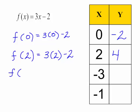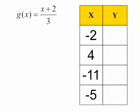What about f at negative 3? That will be negative 9 minus 2, which is negative 11. One more. Let's find our f at negative 1, which will be negative 5.